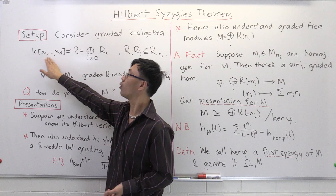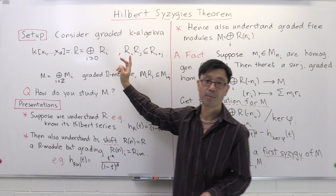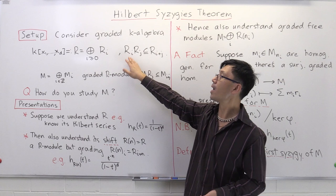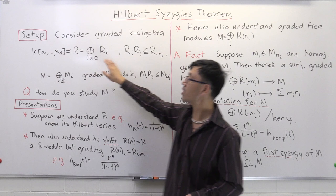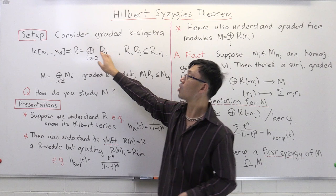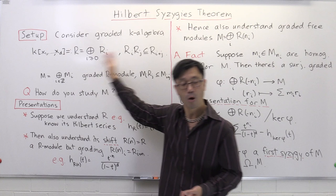So let's see what our setup is. We're going to start with our polynomial ring over the field k with variables x₁ up to x_d. This is a graded k-algebra. The grading gives you a direct sum decomposition of this polynomial ring — it's the direct sum of the R_i's — where multiplying R_i by R_j is contained inside R_{i+j}. The natural grading here is just by degree, so R_i is just the span of all the monomials of degree i.